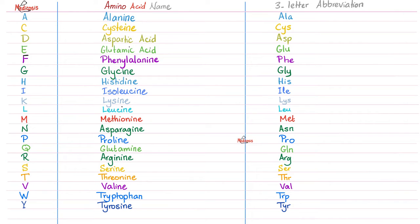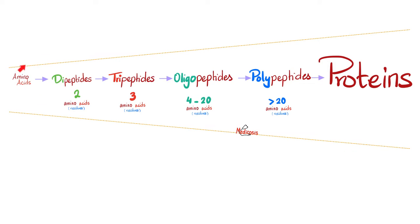Today we're talking about cystinuria — you will have cystin in the urine. Don't forget: this is not cystin, this is cysteine. If you combine one cysteine with another cysteine, you get cystin — spelled just like cysteine but without the E. Amino acids are the small building units; the big guys are the proteins. Two amino acids together make a dipeptide, then tripeptides, oligopeptides, polypeptides, and finally big proteins.